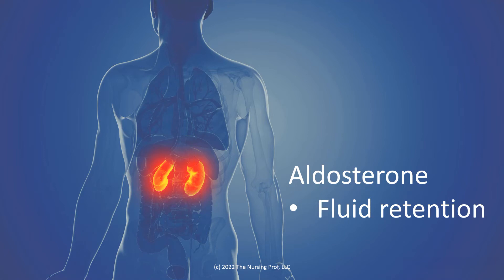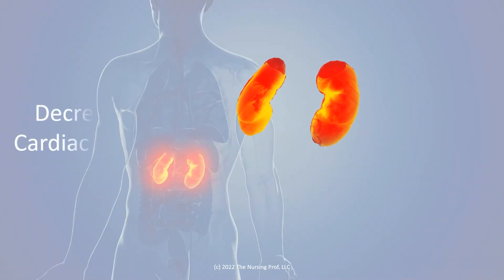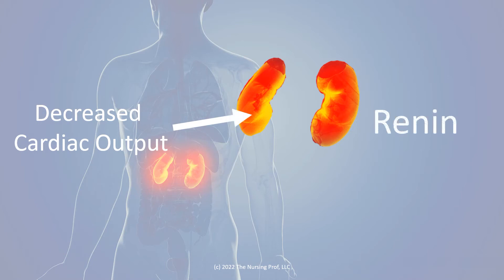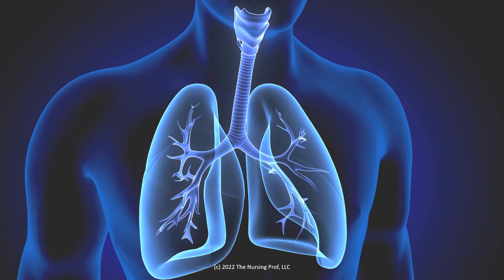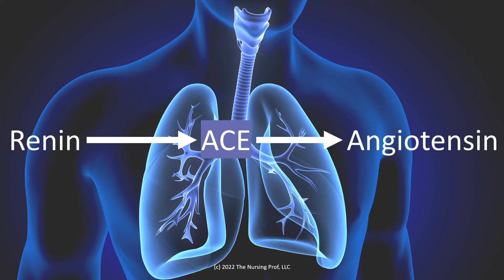We also have aldosterone, which is going to be released and cause fluid retention. Decreased cardiac output stimulates renin production. Renin then goes to the lung, which converts it using an angiotensin converting enzyme to angiotensin — and that's what's causing our vasoconstriction. So the kidney and the lung are both involved here, giving us even more vasoconstriction.